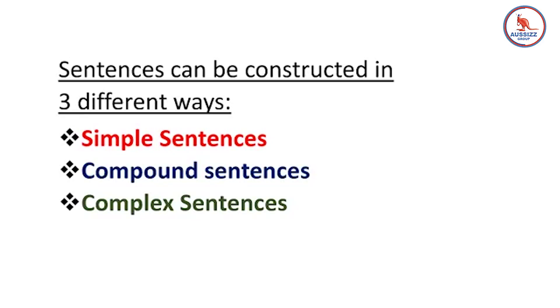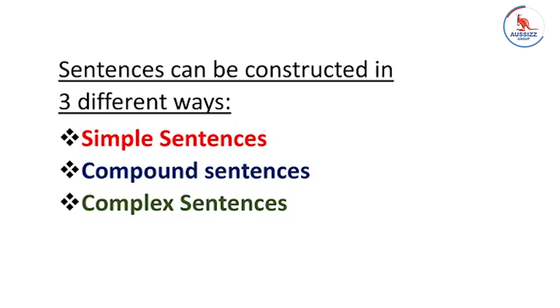One thing I want to say is that it is not as complex as it seems — it's very easy. You just need to understand the basic grammatical concept. Sentences can be constructed in three different ways: simple, compound, and complex. While there are eight types of sentences overall — including passive, interrogative, exclamatory, affirmative, and negative — I want you to focus on these three: simple, compound, and complex.